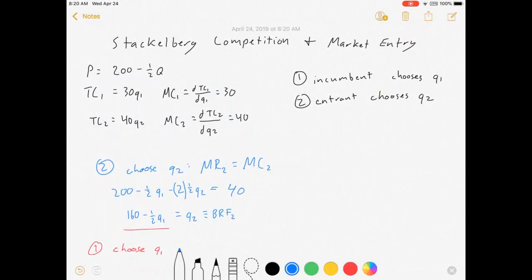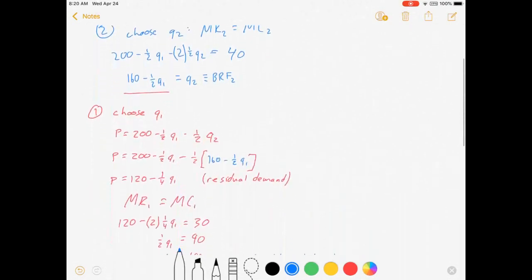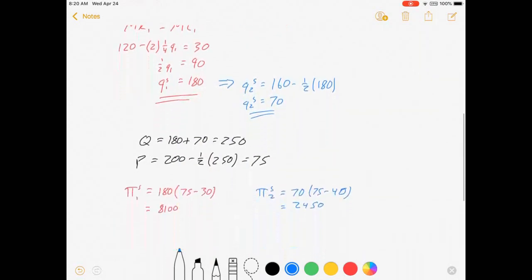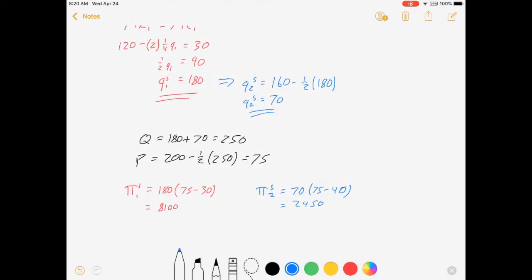So assuming firm one's going to let firm two enter the market, this is the best that they can both do at the time of entry. In my next video, we'll get into issues of might there be ways of firm one preventing firm two from entering. And it's going to really depend on if there's entry costs in addition to this cost function of production. If there's no entry costs, then no, Stackelberg is where it's at. If there are, well, it'll just depend on how big they are. So we'll talk about that next.